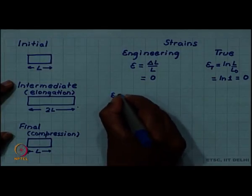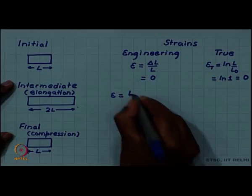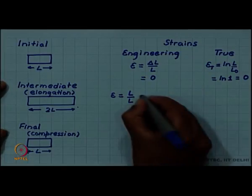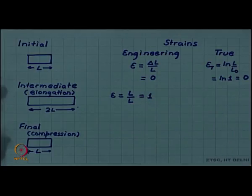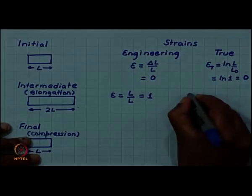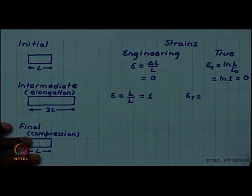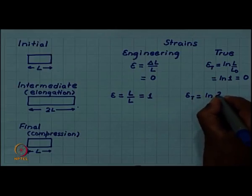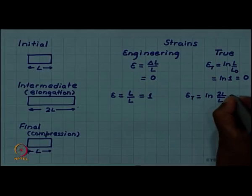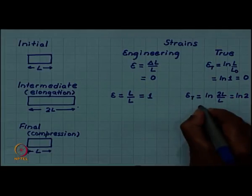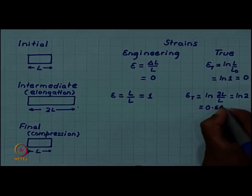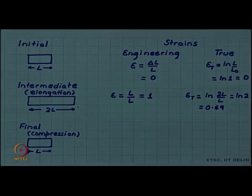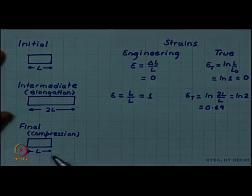The engineering strain for going from L to 2L: the change in length equals the original length, so it is L by L, which is 1 — meaning 100 percent strain. Whereas true strain gives a more conservative estimate: log of the final length 2L divided by initial length L, which is log 2, equal to only 0.69, about 69 percent strain. The interesting situation comes when we describe the final compression. From intermediate to final, the engineering strain gives a change in length of minus L but the original length is now 2L, giving minus 0.5, with the negative sign indicating compression.